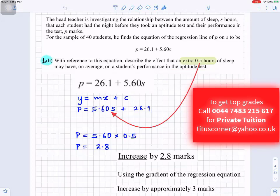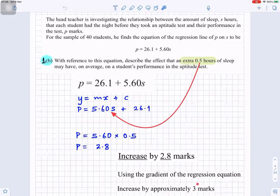We look at the gradient. If you write p = 26.1 + 5.60s, we can arrange it to look like y = mx + c. So your m is 5.60 and your c is 26.1. An extra 0.5 hours has to do with time, and that would affect what is in the s because s is the time. So it will be 5.60 times 0.5, that will give you 2.8. So it would increase by 2.8 marks if you increase the time by 0.5. Using the gradient of the regression equation, increase by approximately 3 marks.